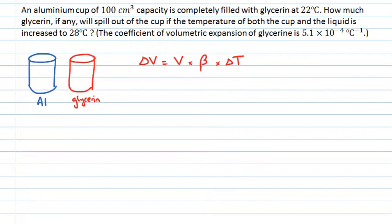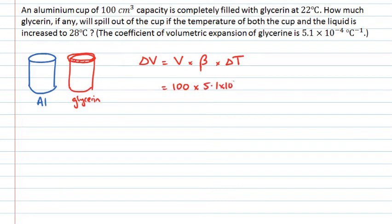In this particular case, the glycerin is constrained inside the cup. If the aluminium cup didn't expand, the glycerin would expand upwards, and that extra volume would spill out on top. We can find the change in volume of the glycerin: 100 cm³ × 5.4 × 10⁻⁴ × ΔT, where ΔT = 28 − 22 = 6, giving 0.306 cm³.